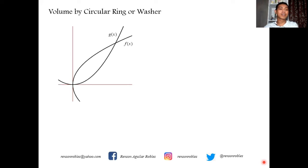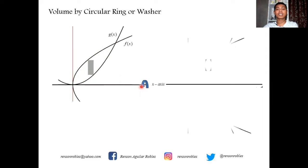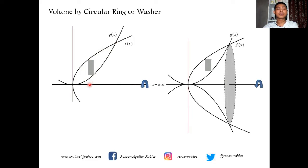Let us consider two functions f(x) and g(x). The region is bounded by f(x) and g(x). Taking a vertical element — touching above by f(x) and below by g(x) — and revolving this region over the x-axis generates a solid. The distance from the inner point to the axis of revolution is the small radius r, and the distance from f(x) to the axis of revolution is the outer radius R.